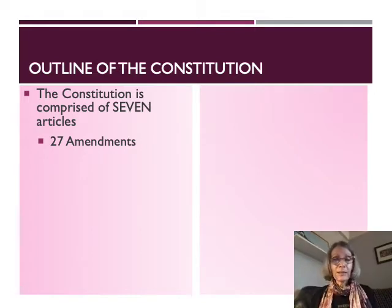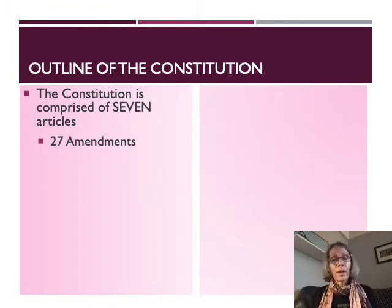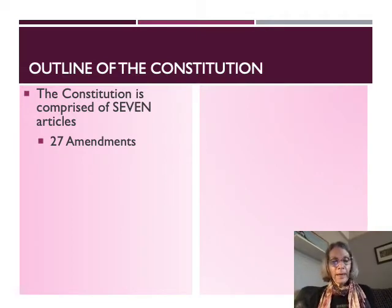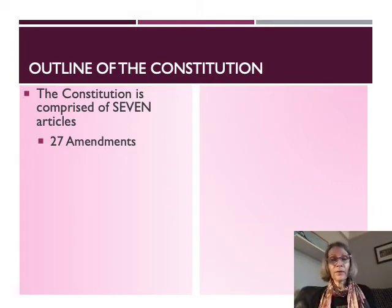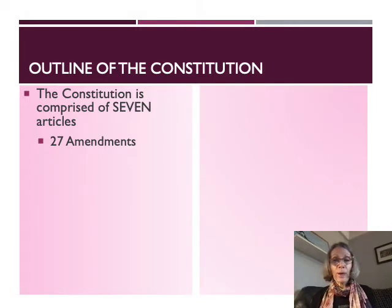As we'll learn when we get to civil liberties, the first 10 amendments are the Bill of Rights. Many states were unwilling to ratify the Constitution without a Bill of Rights. James Madison and other federalists realized they wouldn't get ratification unless they promised to add a Bill of Rights as one of the first acts post-ratification — and in fact, that's what they did. By 1791, the Bill of Rights was added to the Constitution.